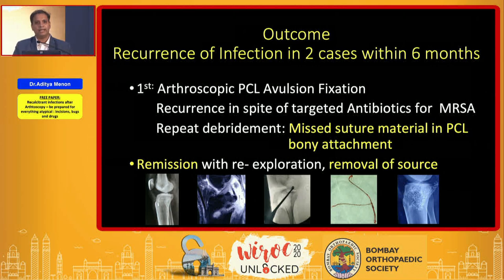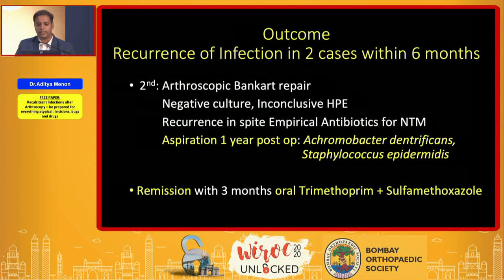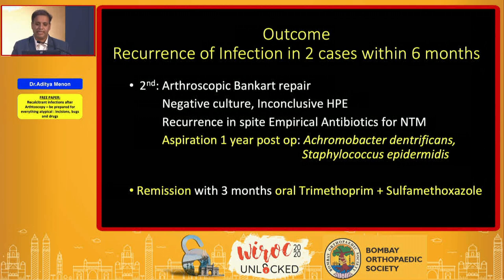One recurrence had a retained ethibond within the PCL bony avulsion. Once we went in, removed that bony piece and the ethibond, the infection settled — and this was in spite of having MRSA on the first debridement and giving appropriate antibiotics. The second case had an arthroscopic Bankart repair. After our debridement, cultures were negative and it was empirically treated for NTM, but the sinus persisted. Aspiration at one year grew Achromobacter and Staph epidermidis, and he settled with simple oral antibiotics for three months.